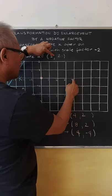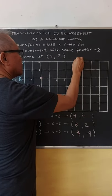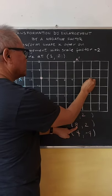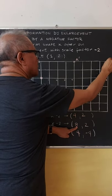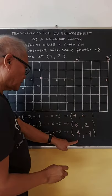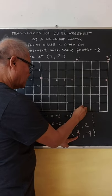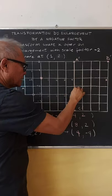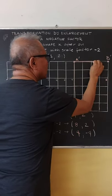Then we plot this: we have A', our B is 8, 2 — so counting 5, 6, 7, 8 — this one is our B', and this one is our C'. Then this is the enlargement of that shape.